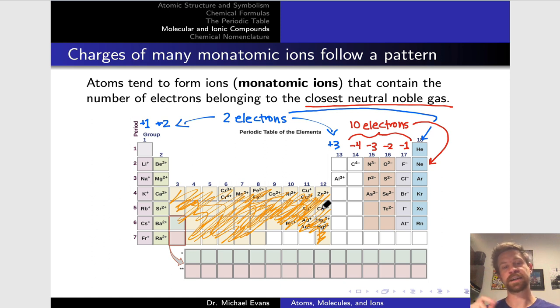Atoms form ions that contain the number of electrons belonging to the closest neutral noble gas on the periodic table. And by the way, the 2 electrons here is for just the second row, Li plus Be 2 plus, and the 10 electrons is only for the second row elements here, C 4 minus N 3 minus O 2 minus F minus. The same analysis and the same trend applies below though. All of these ions have the number of electrons corresponding to the number in the closest noble gas. So for P 3 minus S 2 minus Cl minus it's argon, for Na plus and Mg 2 plus, it's the 10 electrons of the neon atom.